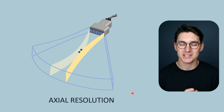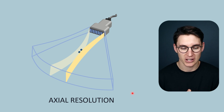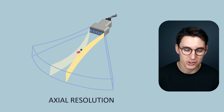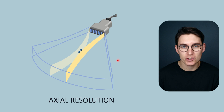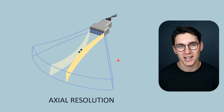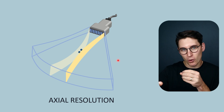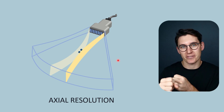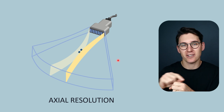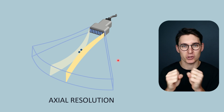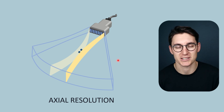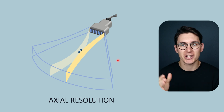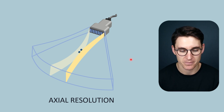So what exactly is axial resolution? Axial resolution is the ability to differentiate two objects at varying depths. There will be a point where those two objects are close enough that the ultrasound machine can't tell that there's a gap between them. Once that happens, we have reached our axial resolution limit.